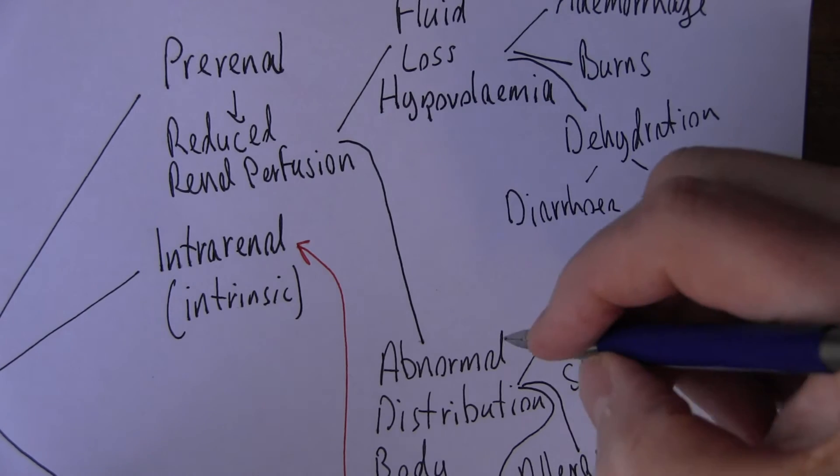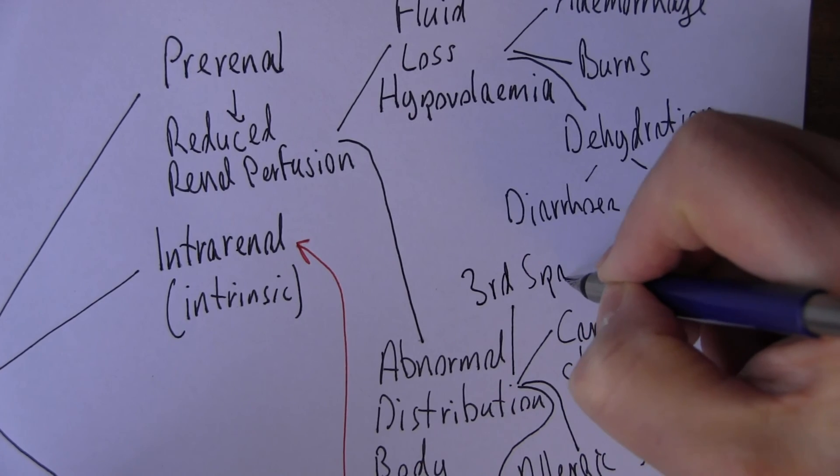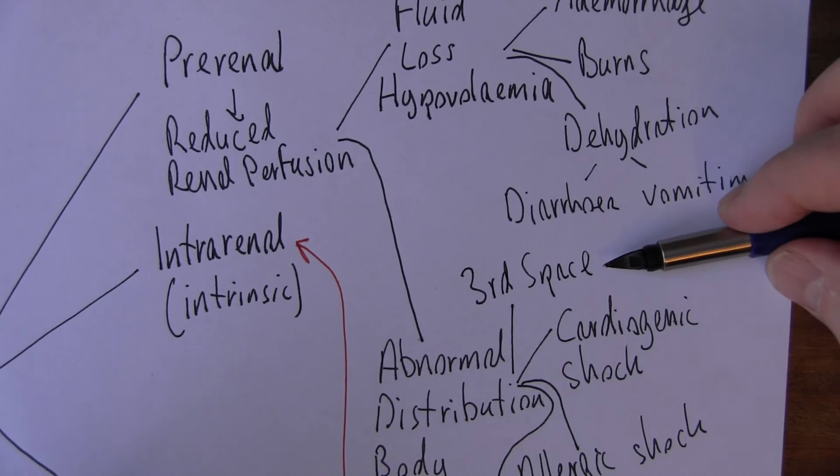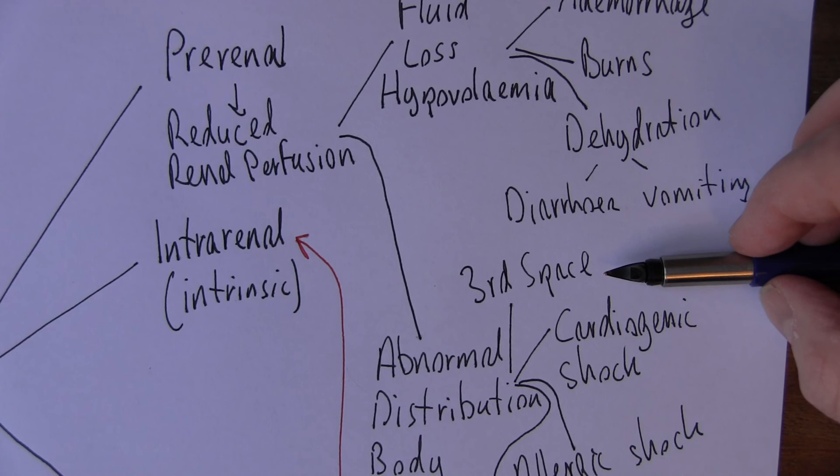Another reason we get abnormal fluid distribution is what we call third spacing. Fluid can be in a third space. Now in this context the first space I guess would be the intracellular fluid. The second compartment would be the extracellular fluid which includes the blood and the tissue fluids. But anything that's in a third space where it's not supposed to be, so for example fluid can accumulate in the peritoneal cavity in peritonitis. There's plenty of fluid there, it's just in the wrong places. It's not available to the circulatory system.